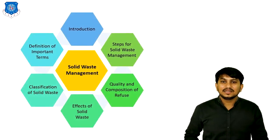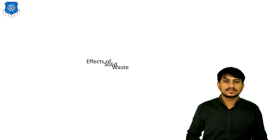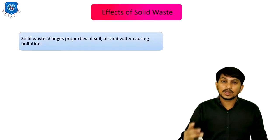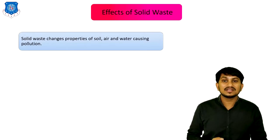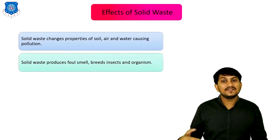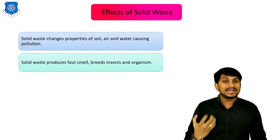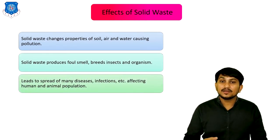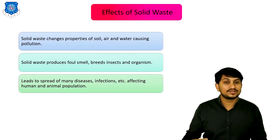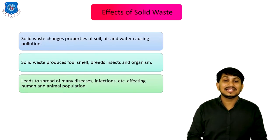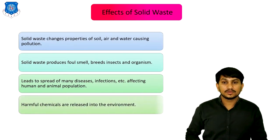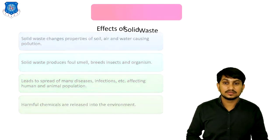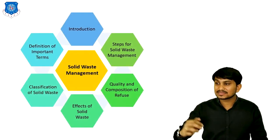Now let's discuss various effects of solid waste. Solid waste changes properties of soil, air and water, which causes pollution. Solid waste produces foul smell, breeds insects and organisms. It leads to the spread of many diseases and infections, affecting human as well as animal populations. Harmful chemicals are released into the environment by this solid waste. These are the various effects of solid waste.